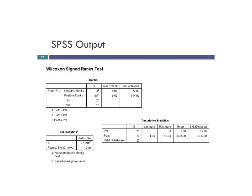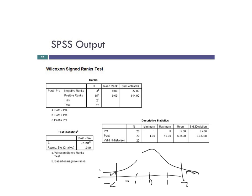Looking at the SPSS output, you're going to get output in the positive and negative ranks — not super helpful — but that's what's being tested on a Z-distribution. The Z-distribution works just like we learned earlier in the semester, with a mean of zero and a standard deviation of one. Therefore, anything greater than plus or minus two standard deviations will be statistically significant, as that comprises 5% of the distribution, with the middle 95% being non-significant. The descriptive statistics help interpret the data: at pre-test the average score was 5 on the 1–10 scale; at post-test it was 6.35, with notable increases in min to max even though standard deviations are relatively the same.